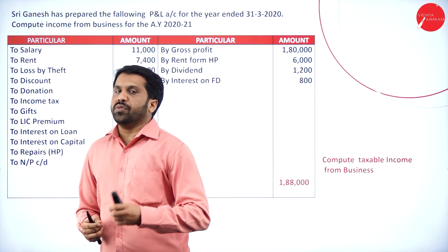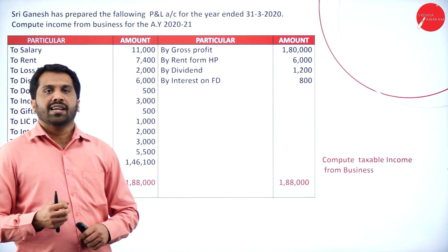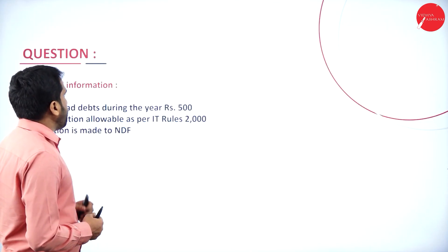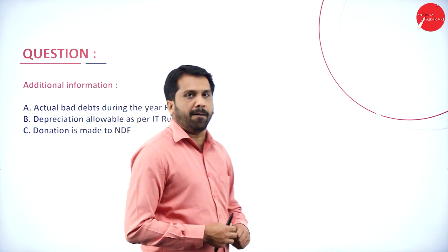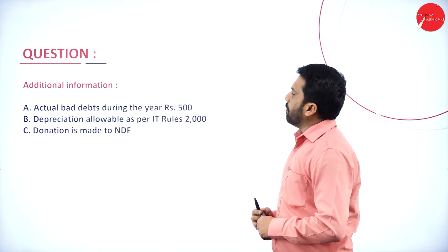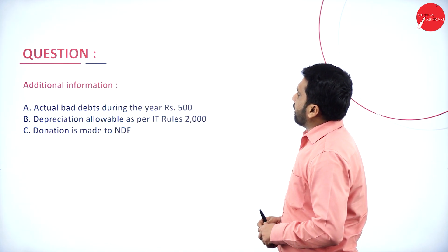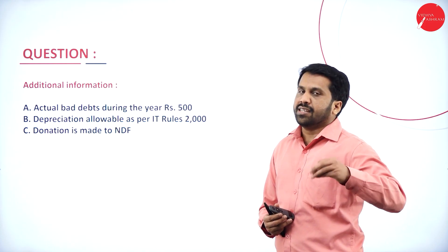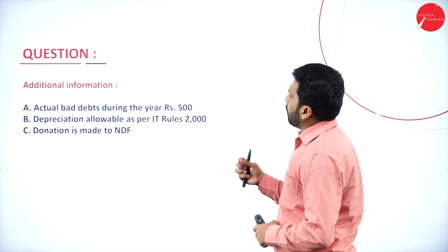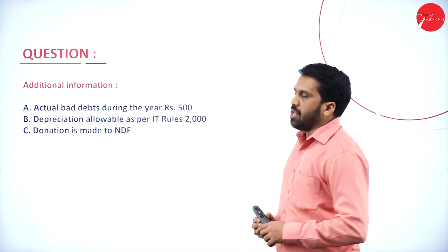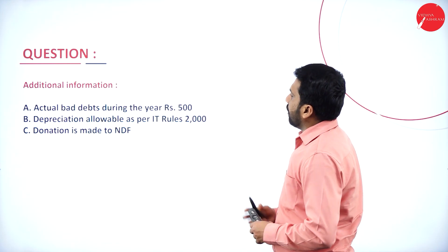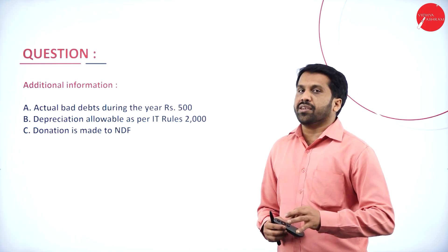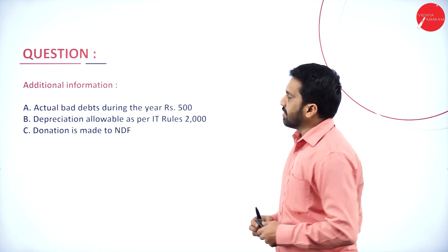We have to see which items are related to business and which are not. Before that, we go to the adjustments — additional information. Actual bad debts during the year: 500, which is an allowed item to be deducted. Depreciation allowable as per IT, we have to minus. Donation is made to NDF — if there is any donation in the question, donation is not part of your business.